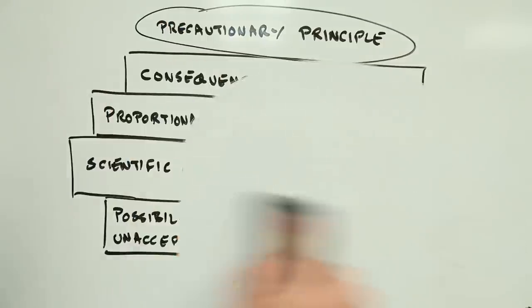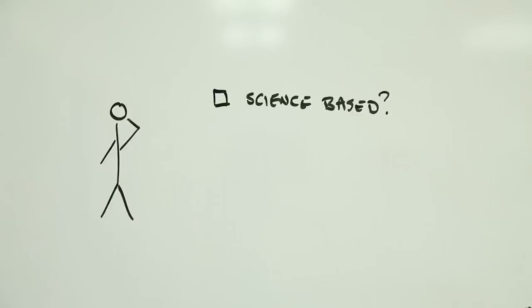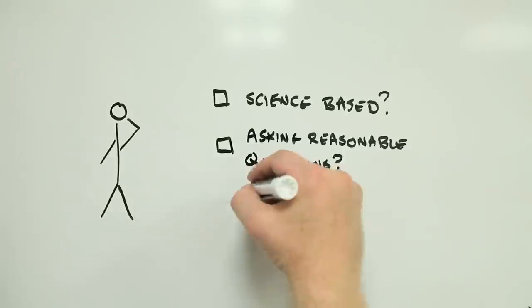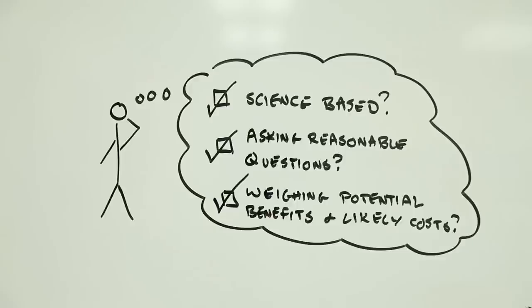In other words, the precautionary principle is about using scientific understanding to take action to avoid harm that might otherwise occur, thinking about the pros and cons of this action in a broader context, and making sure that the effort behind the action is reasonable, given the potential harm it's intended to address.